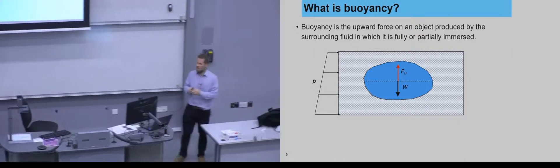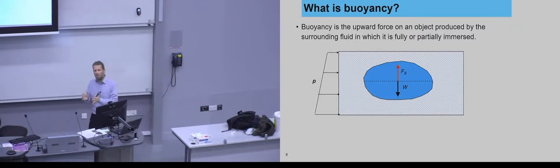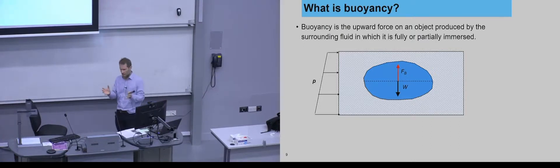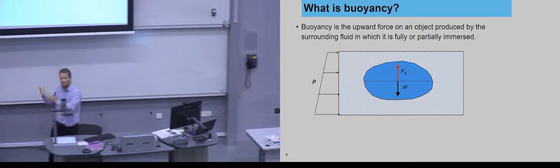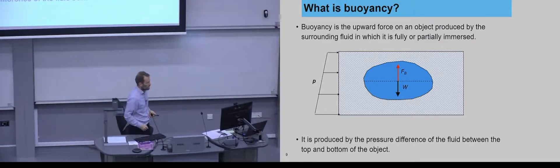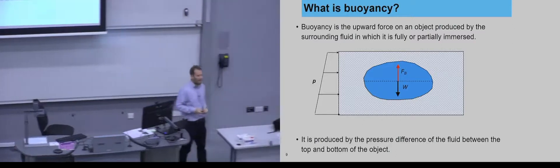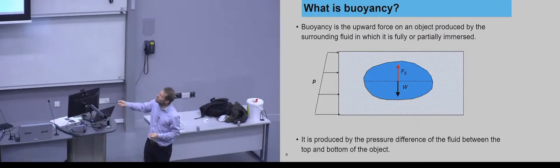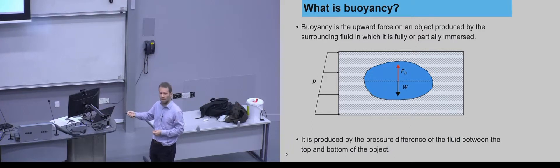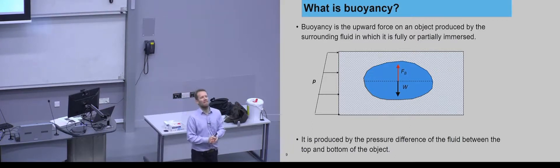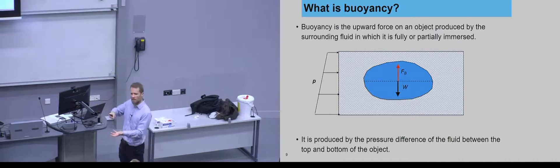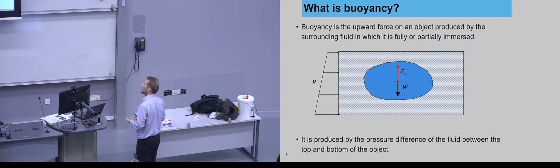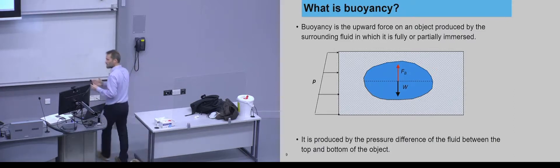Let's think about what buoyancy is. Buoyancy is the upward force produced by the surrounding fluid — the object is immersed in the fluid and that fluid creates a buoyancy force. On the left I have plotted the pressure distribution. Because we are going further, deeper into the fluid, the pressure increases. This means there is a difference in pressure between the top and the bottom surfaces, and this is really the key to understanding buoyancy.